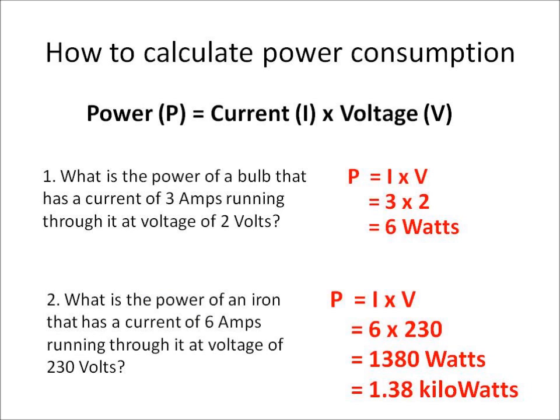I can calculate power in two different ways. The first is if I know the current I and the voltage V. Let's have a look at the first question: what's the power of a bulb that has a current of 3 amps running through it at a voltage of 2 volts? I simply use P = IV: P equals I times V equals 3 times 2 equals 6 watts.